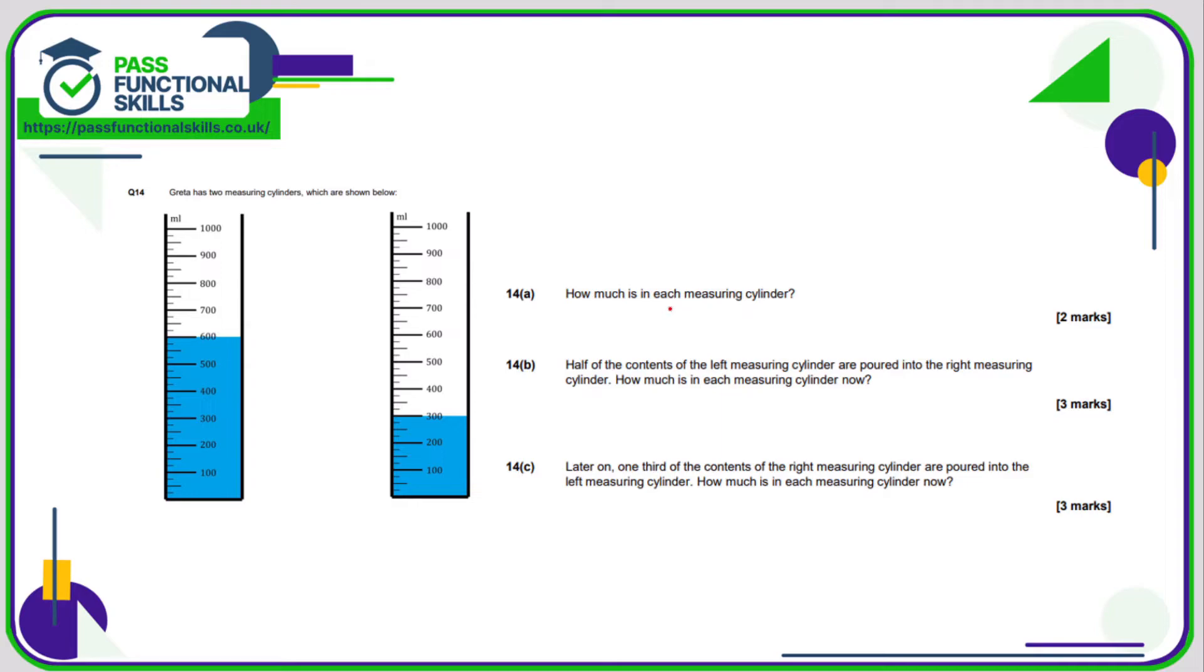Question number 14. How much is in each measuring cylinder? We've got 600 and 300. Half of the contents of the left measuring cylinder, so half of 600 is 300, are poured into the one on the right. So therefore the 600 now becomes 300, and the 300 becomes 600. One third of the contents of the right, one third of 600 is 600 divided by 3, which is 200. So 200 are poured into the left. Therefore 600 becomes 400, and the 300 becomes 500.